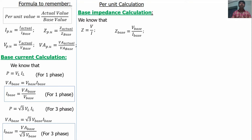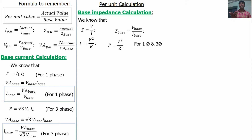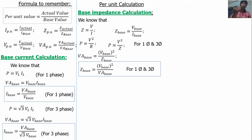We can represent power as P equals V squared divided by Z, since P equals V times I and I equals V divided by Z. So VA base equals V base squared divided by Z base, which gives Z base equals V base squared divided by VA base, valid for both single-phase and three-phase systems. If VA base and V base are given, use this formula to calculate Z base.